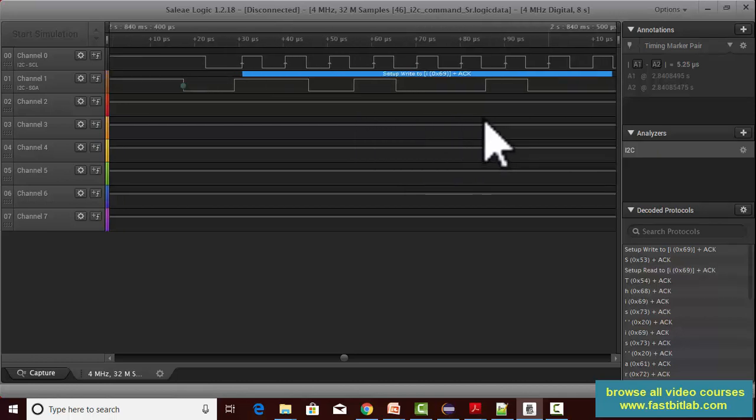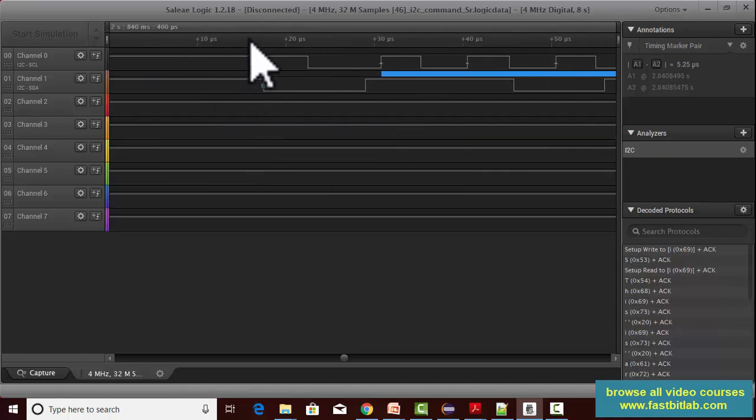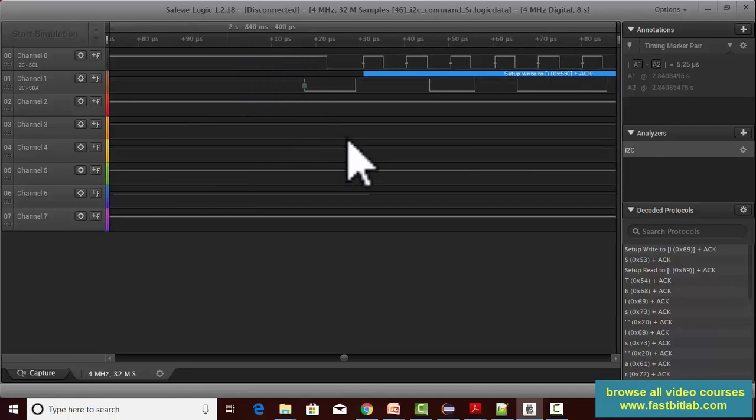You should remember this, and the exception is start and stop conditions. Start and stop condition transitions happen only when the clock is high. That's how data transitions and signaling transitions—start and stop—are differentiated.